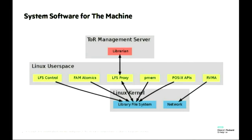Here's our current version of the system software for the machine. We have a management server that does all our shared management. Right now it runs a daemon that supports shared allocation - we call it the librarian, because once you have books full of memory, you need a librarian to manage your books. It was fun when our recent college graduate engineer came up with this library metaphor. The librarian as a term isn't used in Linux. We avoid calling it a 'library of books' since library is a heavily overloaded term. A collection of books in our world is called a shelf.